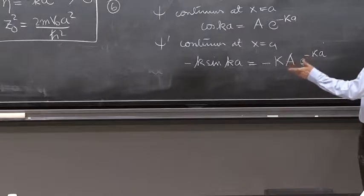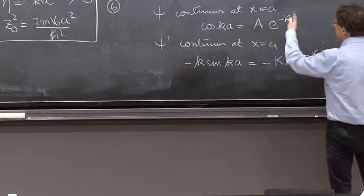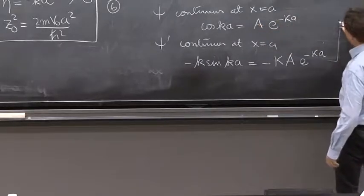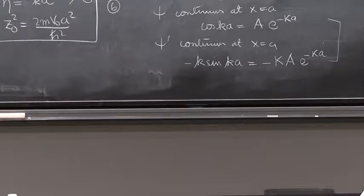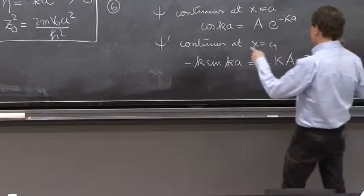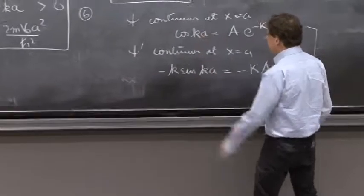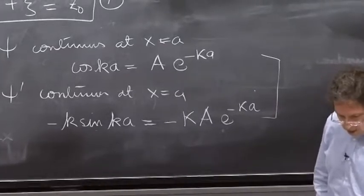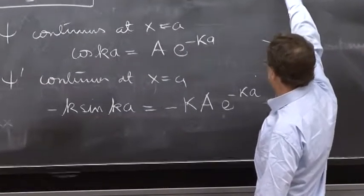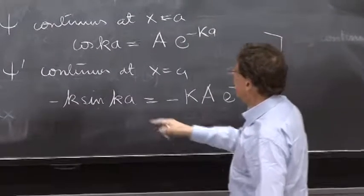And how many unknowns? There's A and some information about κ and k. And the easiest way to eliminate that is to divide them. So you divide the bottom equation by this equation. So what do we get? Divide the bottom by the top.